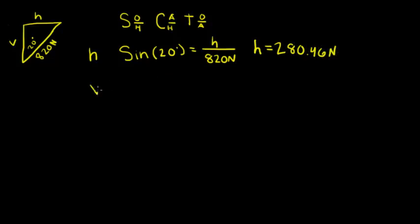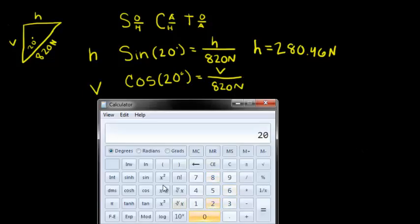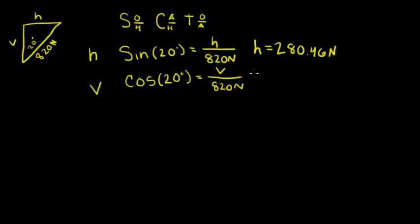Now let's solve for the vertical. We know the angle, we're looking for the adjacent side, and we know the hypotenuse, so we'll use cosine. The cosine of 20 degrees equals the adjacent side V over the hypotenuse, which is 820 newtons. Plugging this into our calculator, the vertical side is 770.55 newtons.